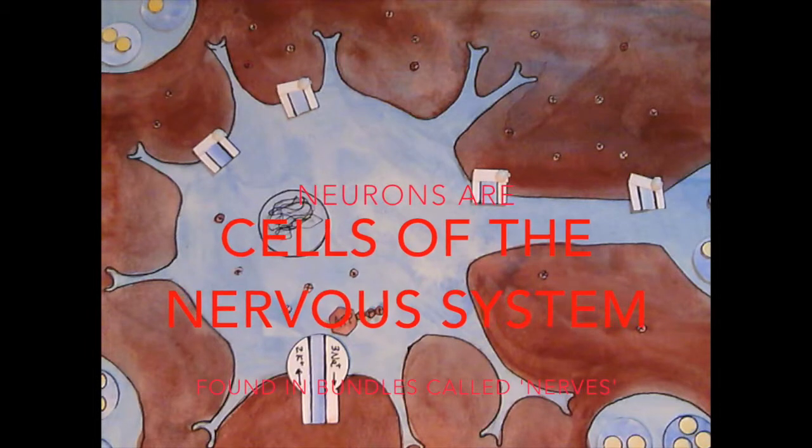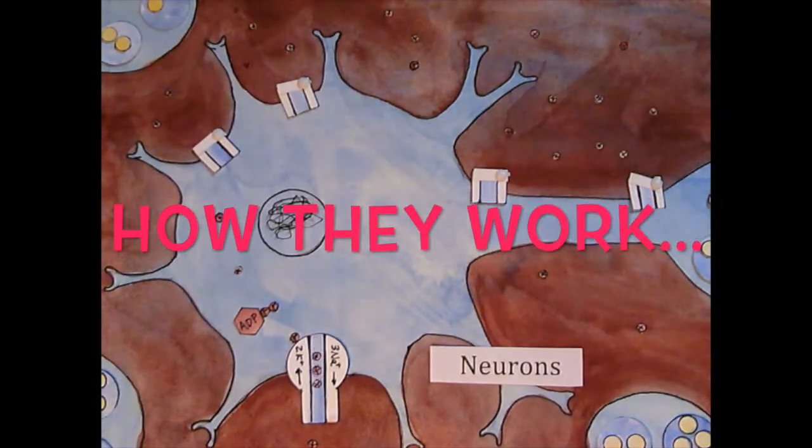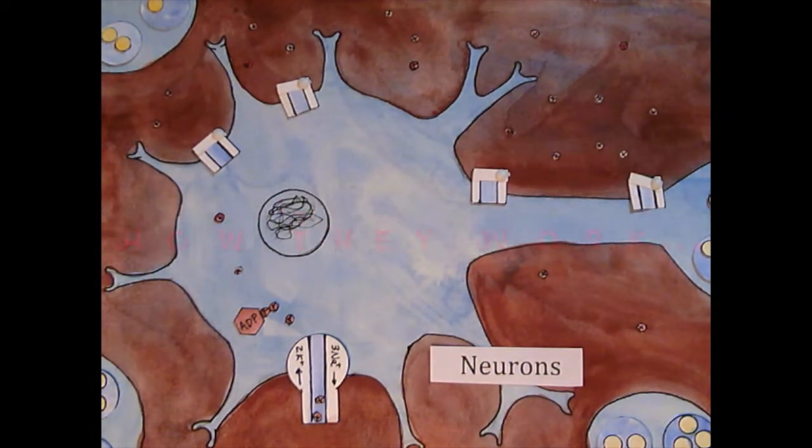Neurons are cells of the nervous system that can be found in bundles called nerves. In general, all neurons function the same way.